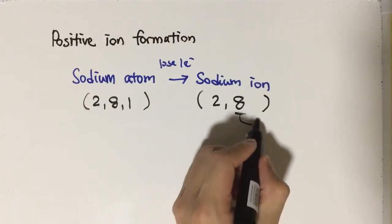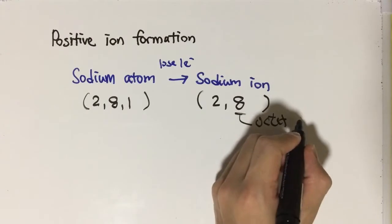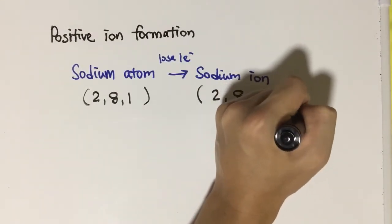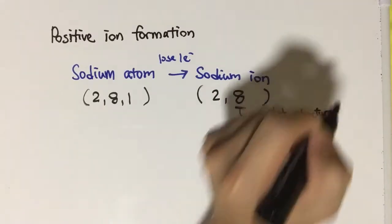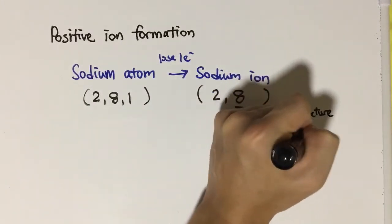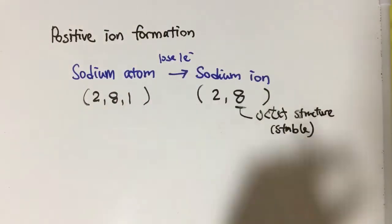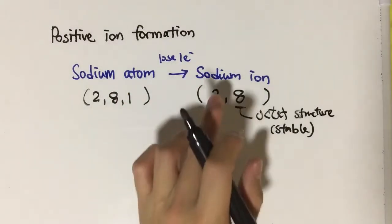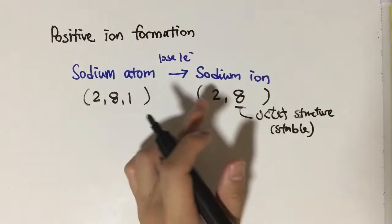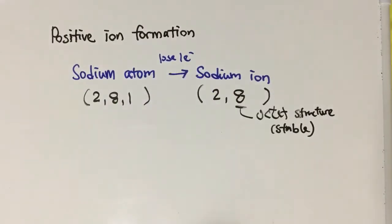This is due to the octet rule — with eight electrons in the outermost shell they will become more stable. Everything in chemistry tends to become stable, and that's why sodium atom will tend to lose one electron to form the sodium ion.